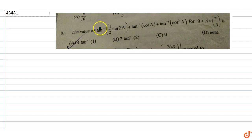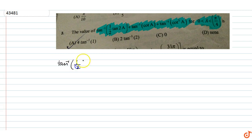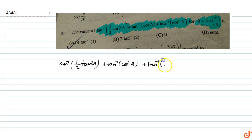The question given is to find the value of tan inverse of half tan 2a plus tan inverse of cot a plus tan inverse of cot cube a, for a belonging to 0 to pi by 4.